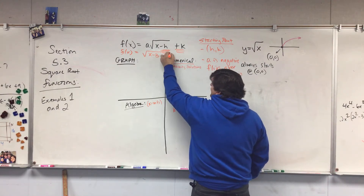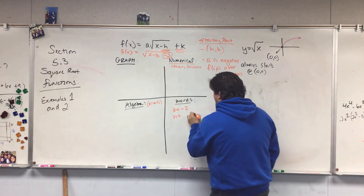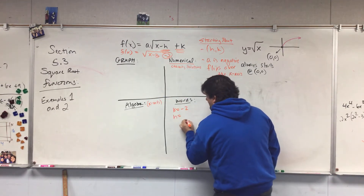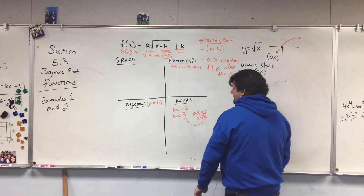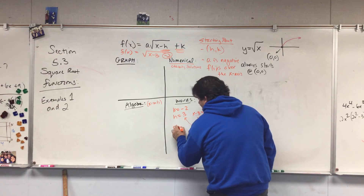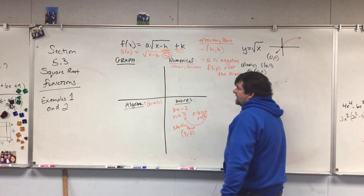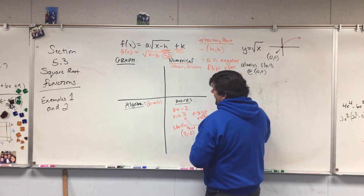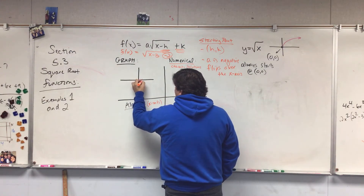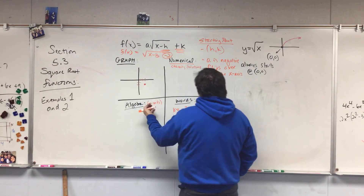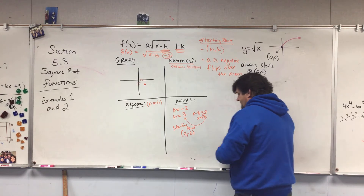What we're given is h and k. K is equal to negative two. For h, we take x minus three, set it equal to zero, so x equals three — h is three. So my starting point is at three and negative two. I can take this and graph it: starting point is at three on the x-axis and negative two on the y-axis, and it's going to go up and curve to the right.